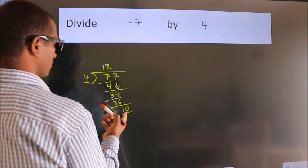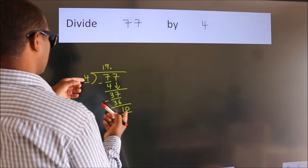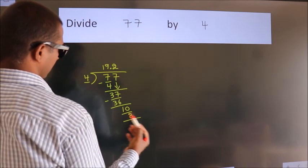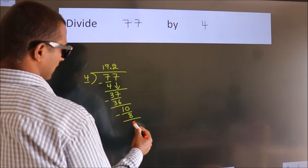A number close to 10 in the 4 table is 4 twos, which is 8. Now we subtract and get 2.